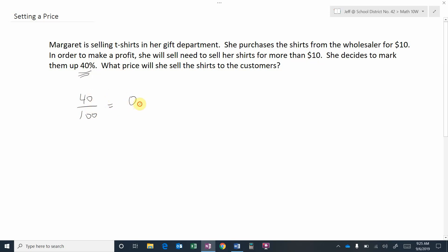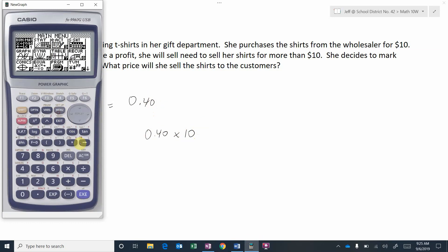So now, in order to take 40% of 10, we're going to go 0.4 times 10. And you can do this in a calculator if you like. 0.4 times 10 is just going to be 4.